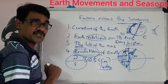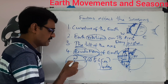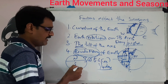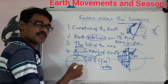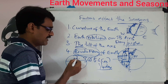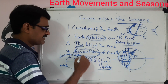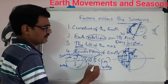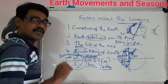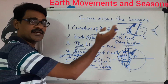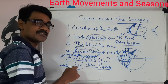Due to revolution, the seasons change. During revolution, sometimes the northern hemisphere comes towards the sun and at other times the southern hemisphere comes towards the sun. When the northern hemisphere faces the sun, it is summer there and winter in the southern hemisphere, and vice versa.